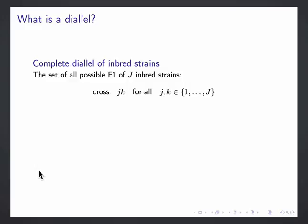And what is a diallel? Well, a complete diallel of, for example, eight strains would be all possible F1 hybrids of those strains plus the strains themselves. So it's sort of an all-by-all cross.